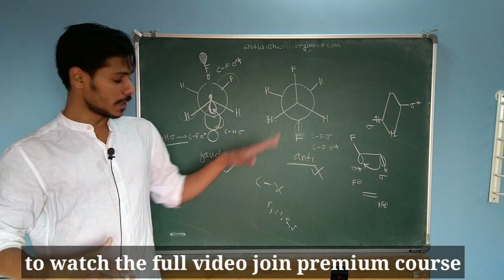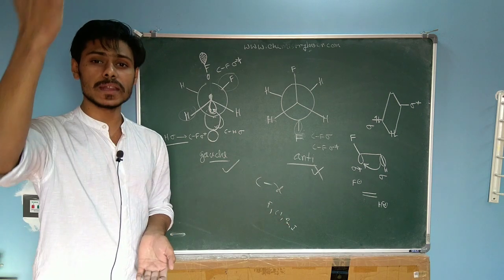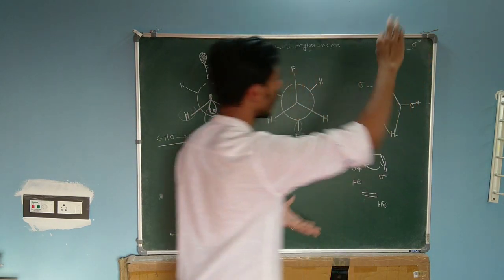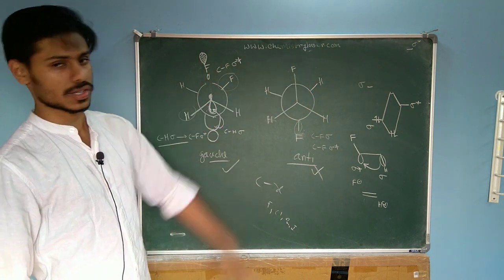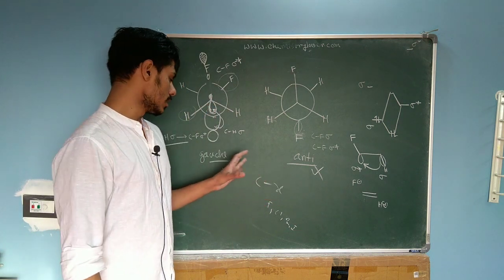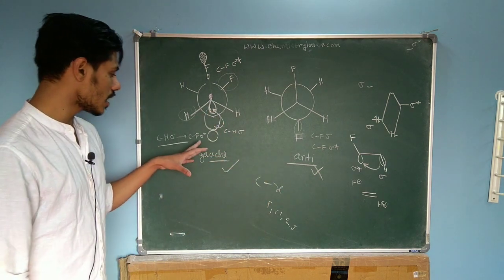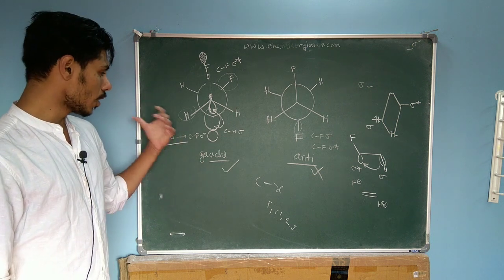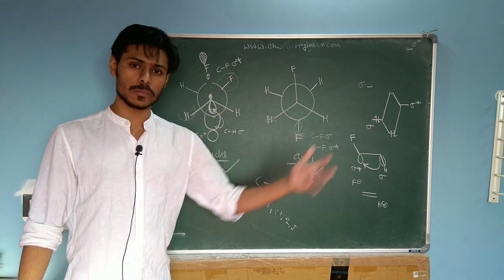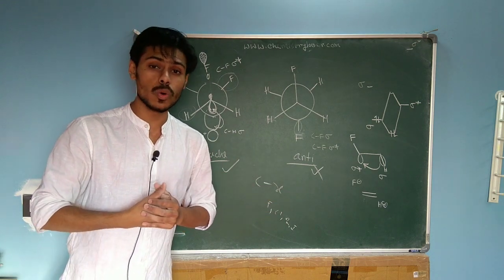For other halogens — chlorine, bromine, or iodine — the sigma star will have very high energy, very far apart from the sigma, so there is no interaction. In the case of fluorine the situation is very optimized. That's why this effect is only possible for fluorine-substituted compounds. Normally the molecule is more stable in the anti form, but due to this sigma to sigma star interaction, the molecule is more stable in the gauche form — and that's why it is called the gauche effect.